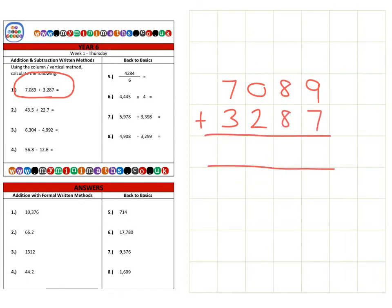So first of all we're going to add our units, so that's 9 add 7 is 16, carry the 10 over to the tens column. Then it's 1 ten add 8 tens add 8 tens, so that's 17 tens, so we carry into the hundreds column.